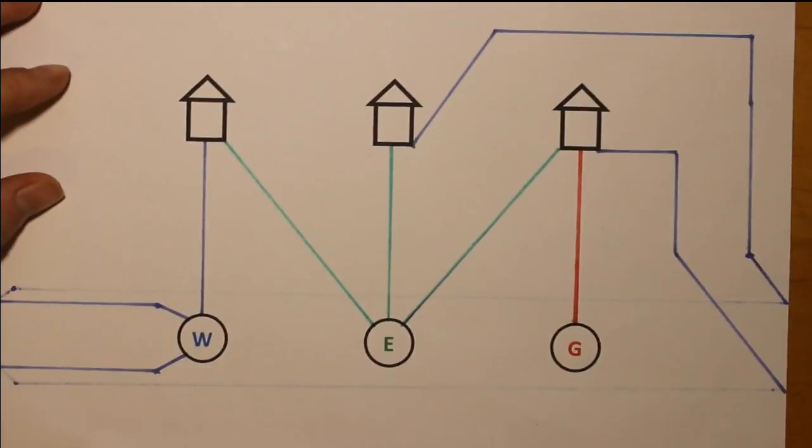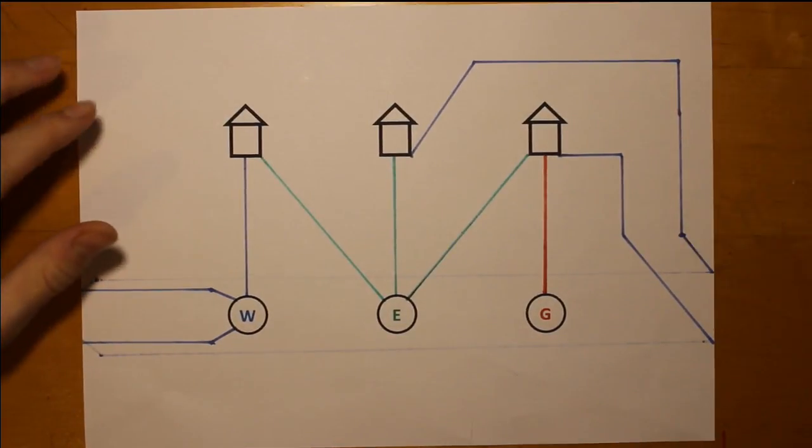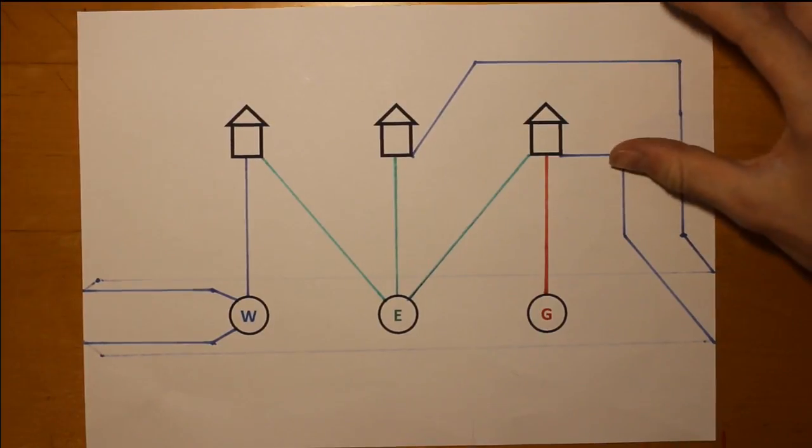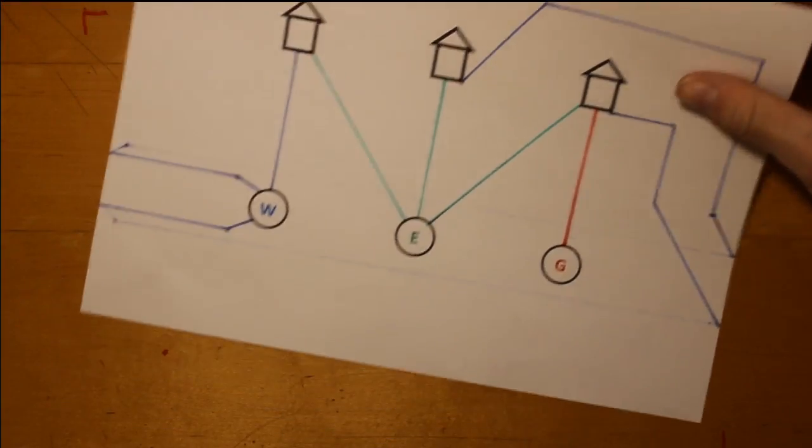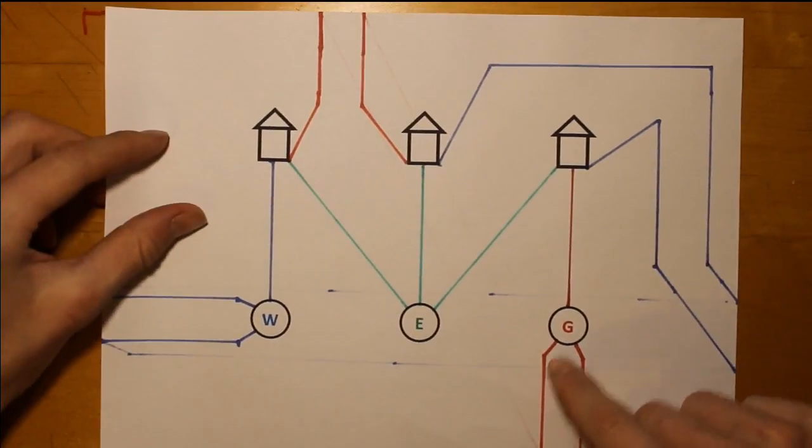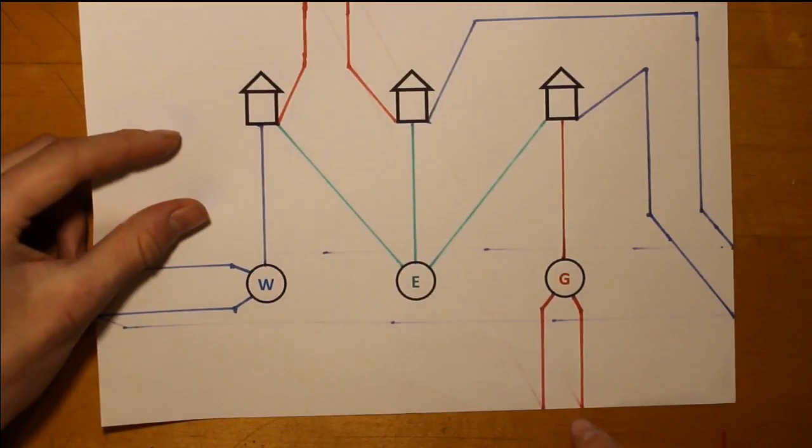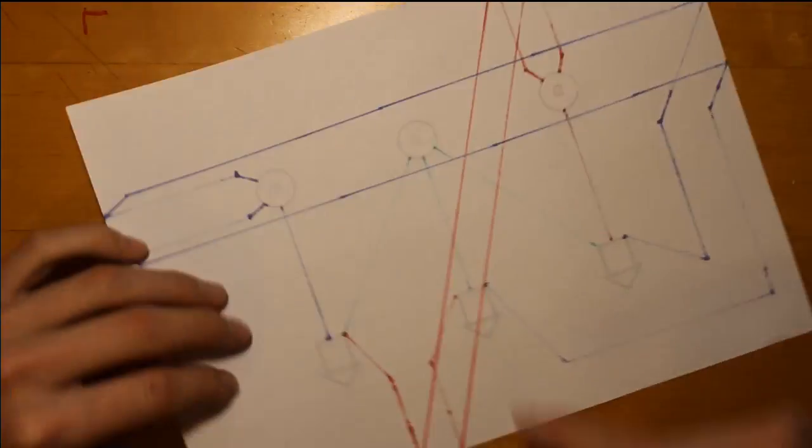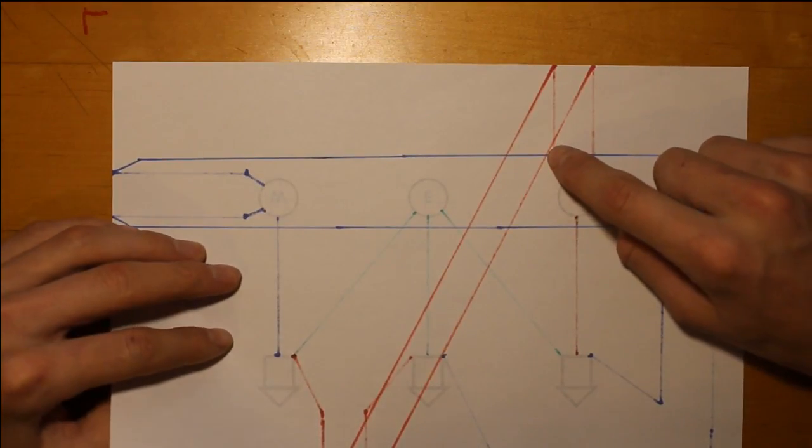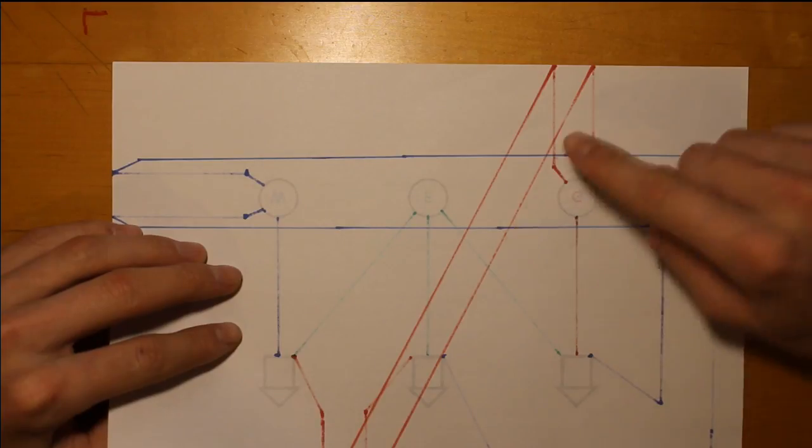However, when we try to do this in the same way that we connected water, we run into the problem where two lines will intersect on the back. This is not allowed. Here you see from the gas utility, similar to water, we're going off the edge of the page, following around the back, but here you can see the gas lines are intersecting the water lines. This isn't allowed.